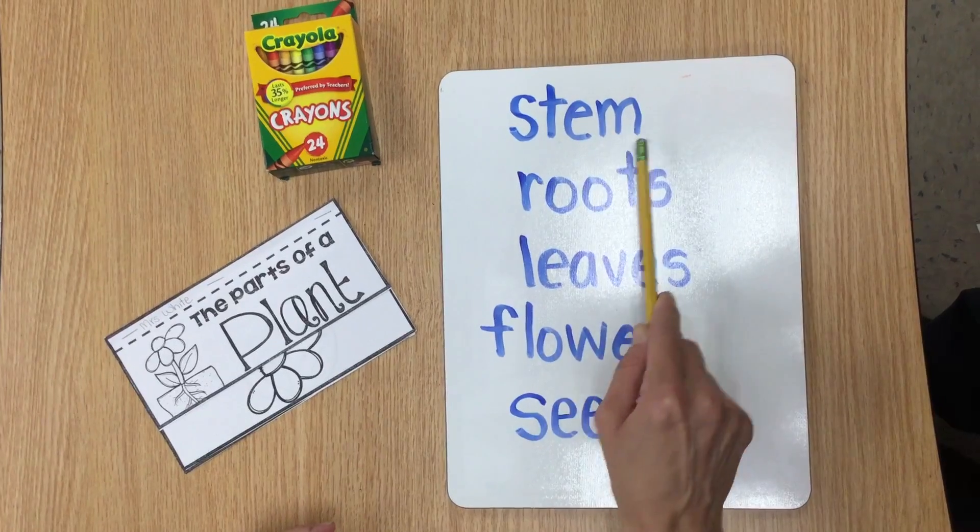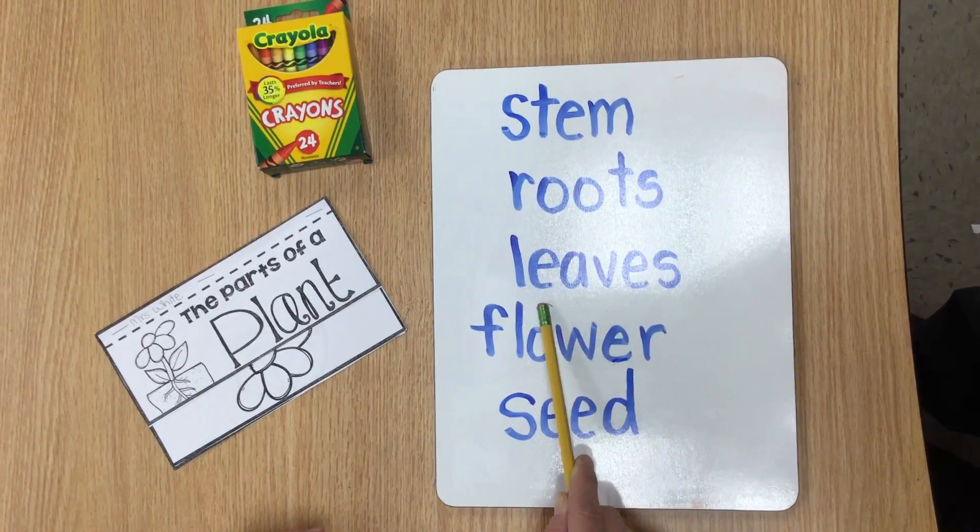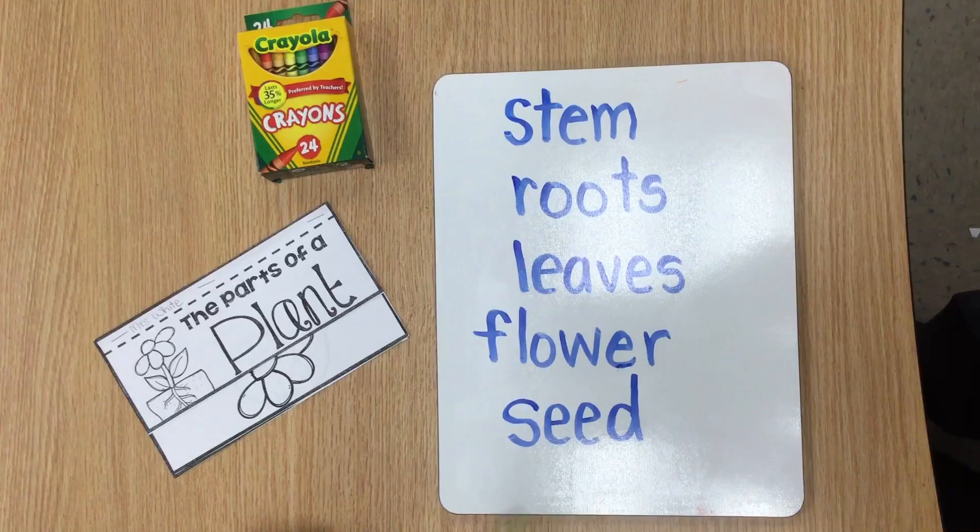We have stem, roots, leaves, flower, and seed.